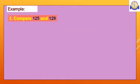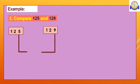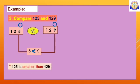In third example, compare 125 and 129. Digits of these numbers are equal. So, first compare hundreds place digits. Hundreds place digits are equal. Next compare tens place digits. They are also equal. So, now compare ones place digits. Okay, they are different. So, compare them. 5 is smaller than 9. Therefore, 125 is smaller than 129.